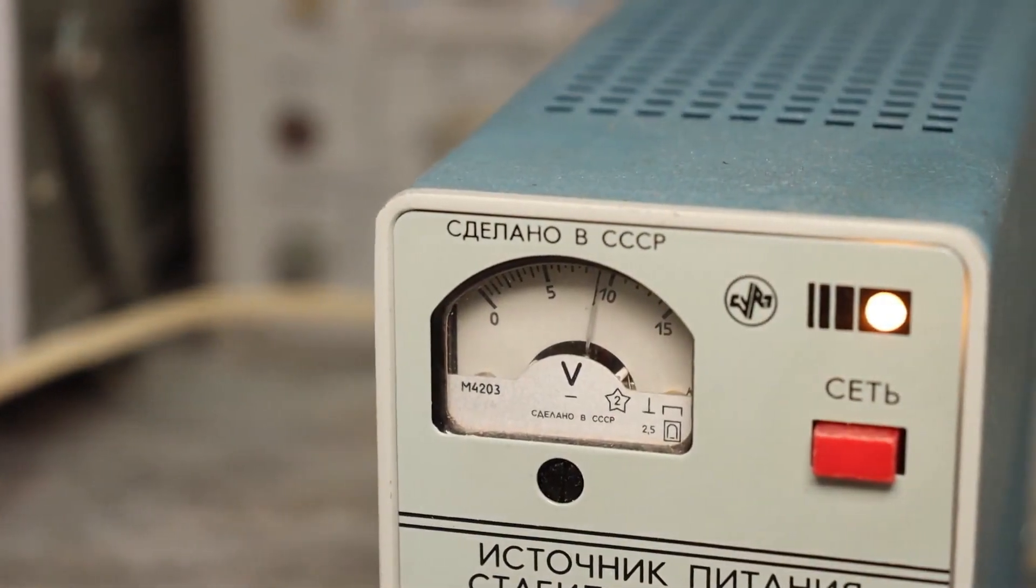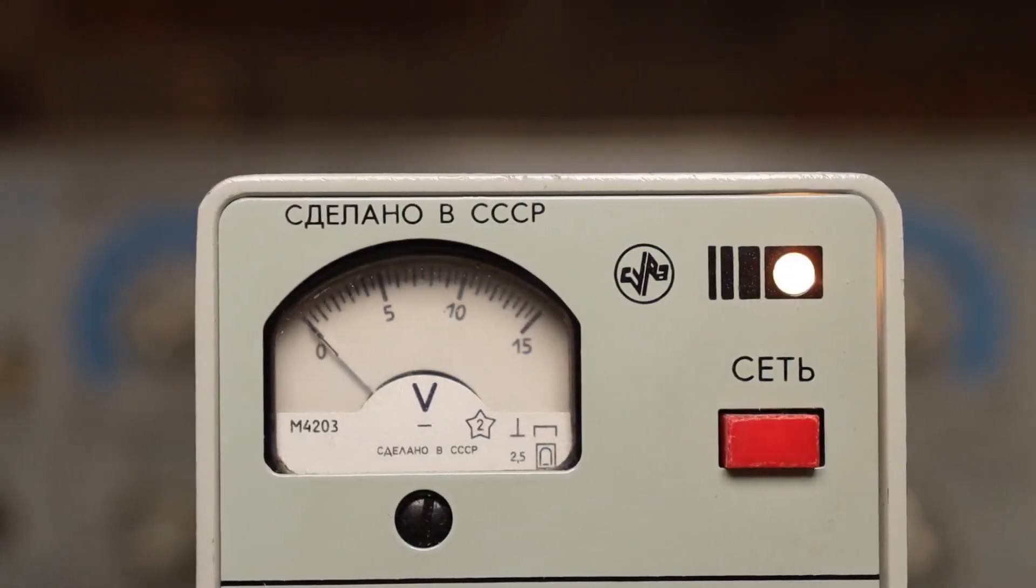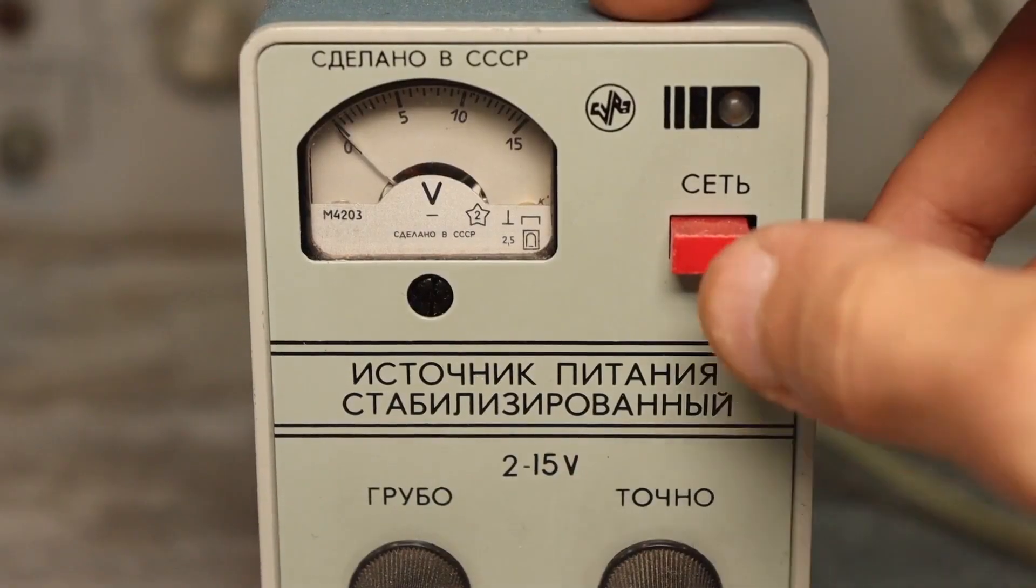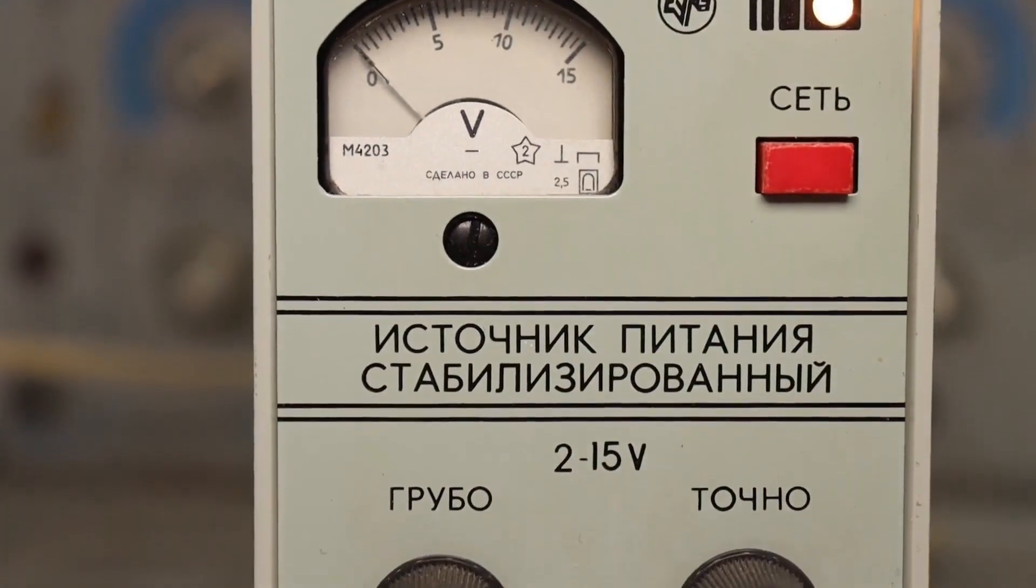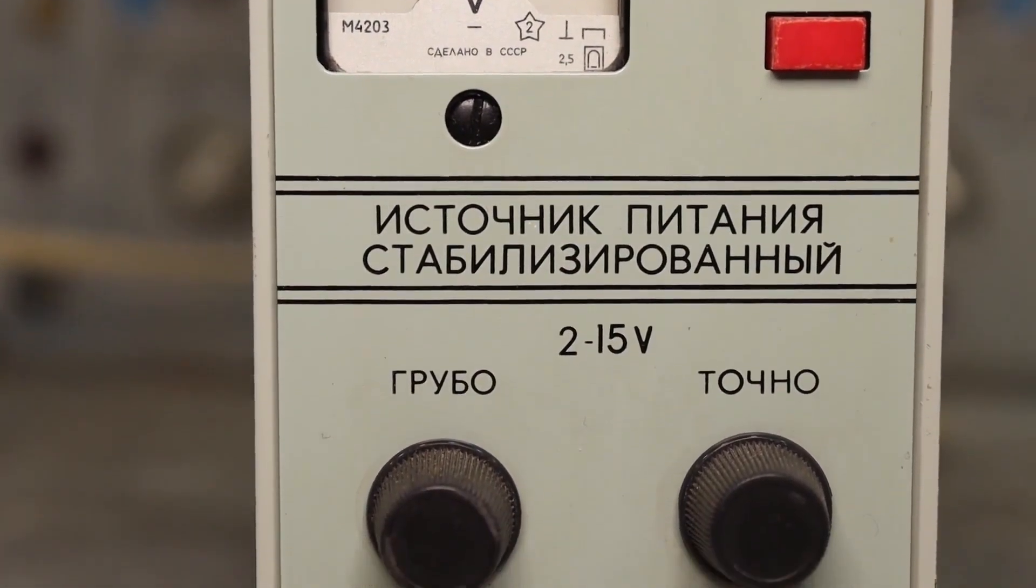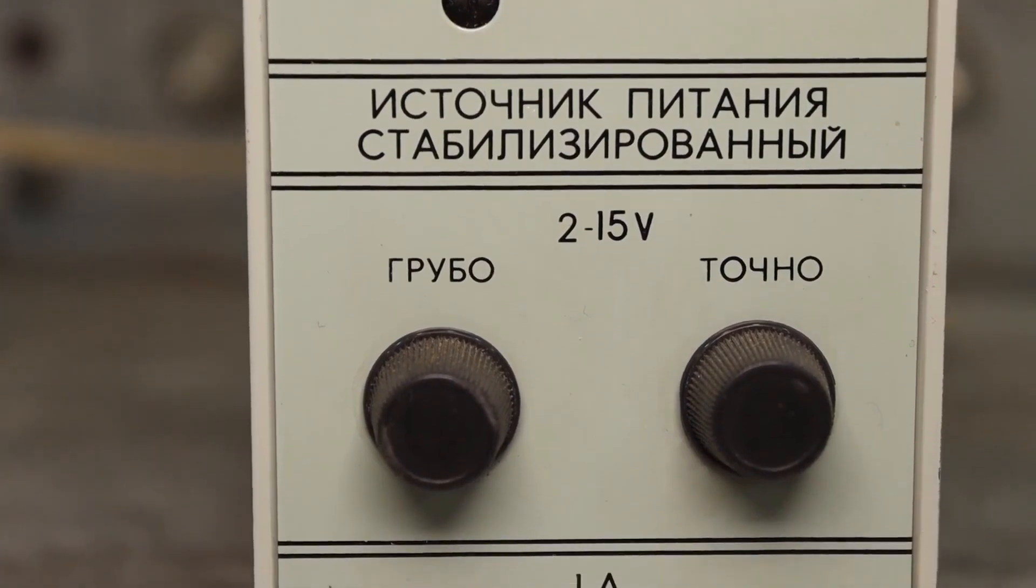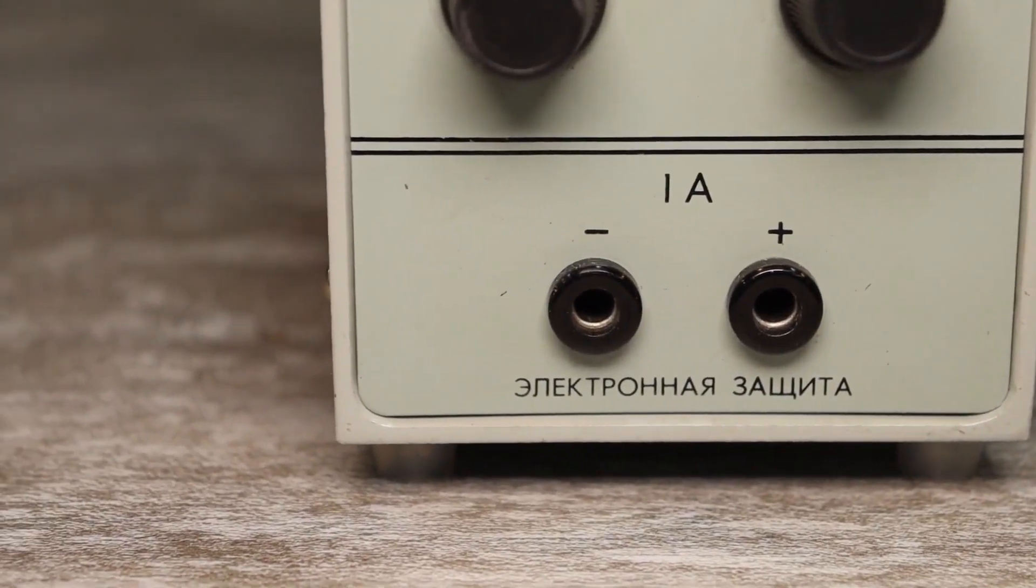On the front panel of the power source there's a small analog voltmeter next to a power switch with an indicator lamp. Just below there are a couple of knobs for coarse and fine adjustment of the output voltage. At the very bottom are the output terminals.